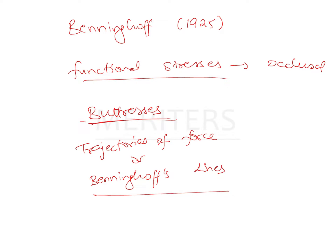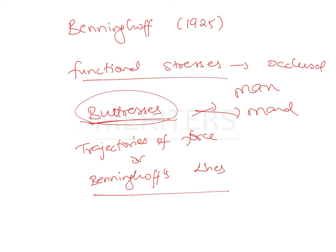These trajectories are seen in all types of bones — spongy and compact. What matters is the bone's reaction to forces, seen as thickening like buttresses. These trajectories of force are present in both the maxilla and the mandible.